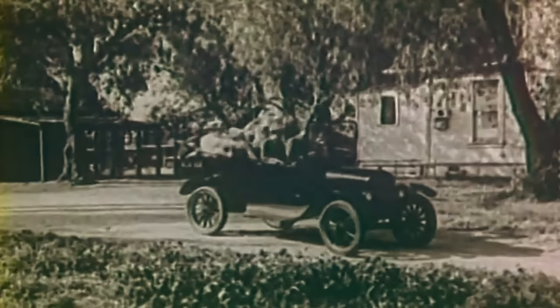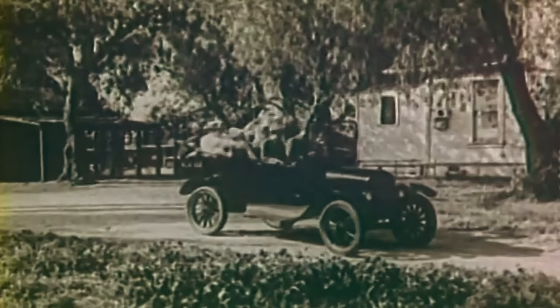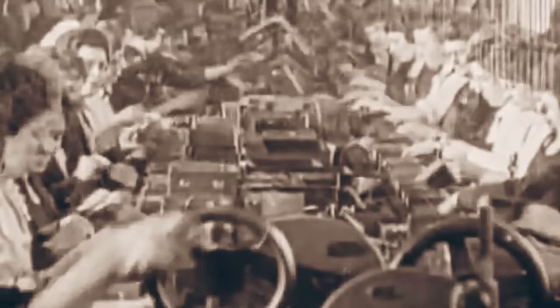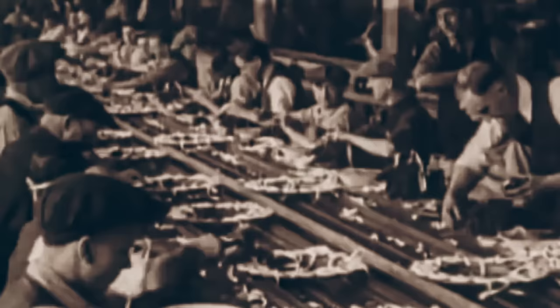It was incorporated into the most common variants of the Model T, and consists of basic wiring that integrated a magneto-powered ignition system, lighting and a horn, and a generator and battery combination that was used to primarily drive the starter motor. Over its 19-year production span, with 15 million units produced, the Ford Model T's electrical system had evolved drastically.